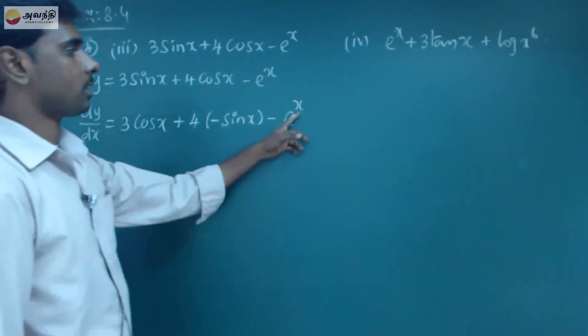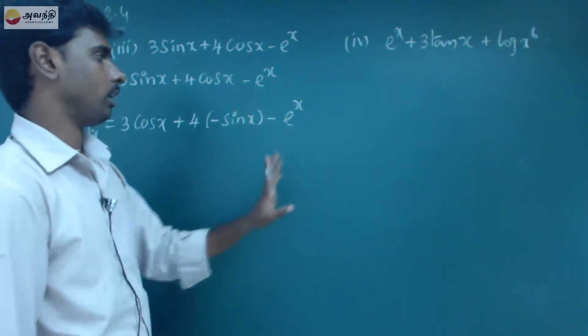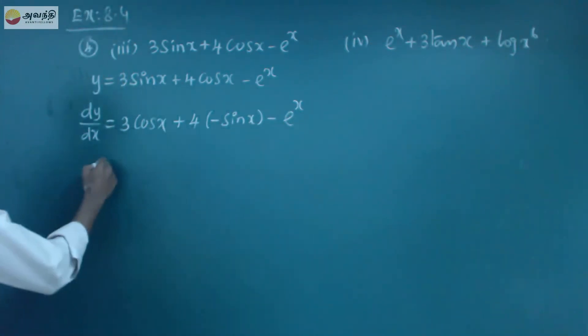So apra x differentiation panna, x differentiation panna 1, so anala e power x. So that is dy by dx equal to 3 cos x plus sin minus minus 4 sin x minus e power x.